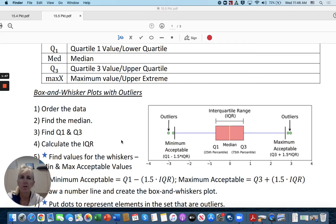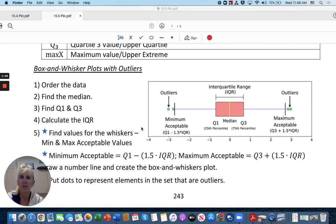So here we have a box and whisker plot with outliers. We're going to order the data, find the median, put it inside the box, find Q1 and Q3, the outsides of the box, make the box, calculate the interquartile range. Again, it'll be this number subtract this number, find the values for the whiskers.